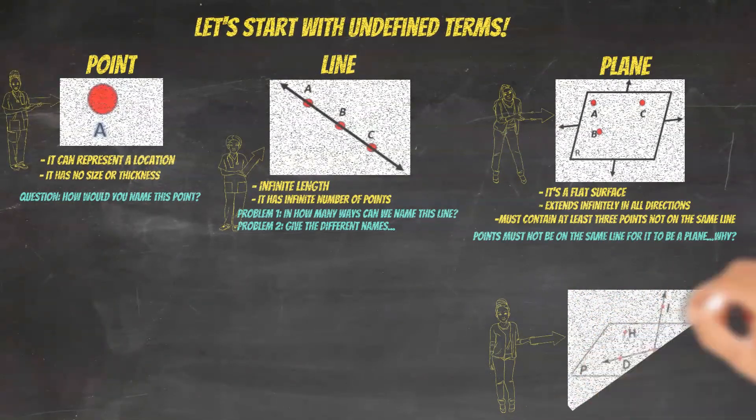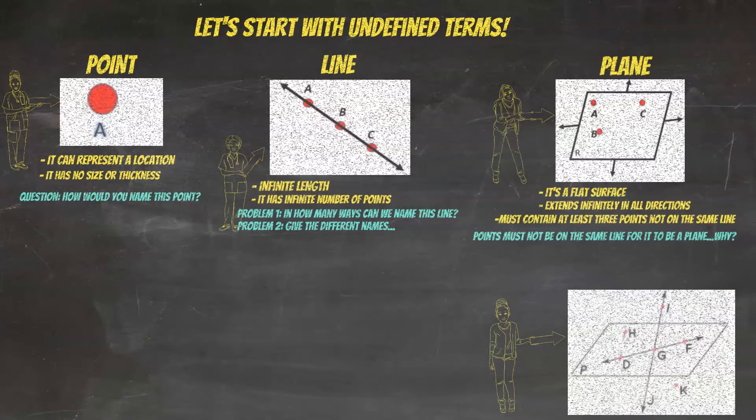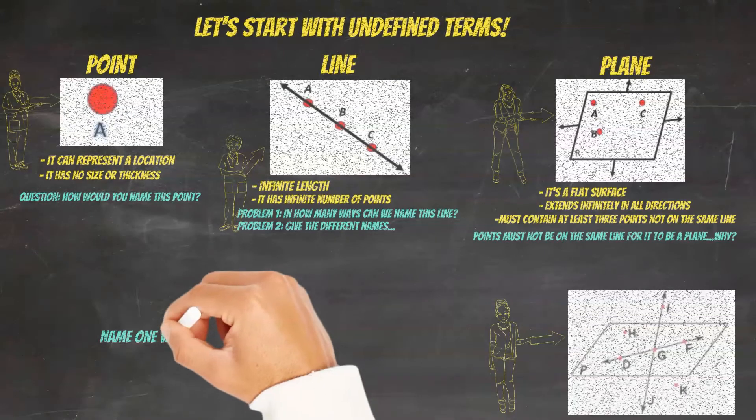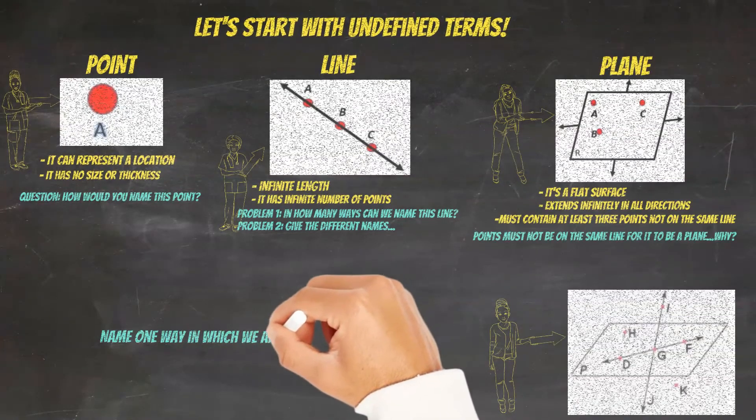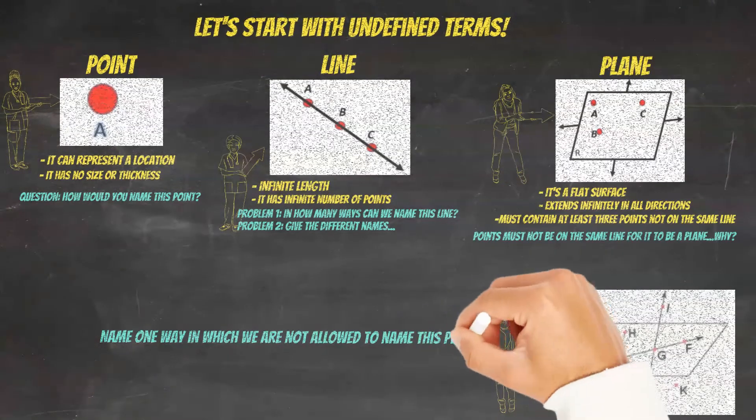Let's look at the following diagram. Here you'll see a plane, a line on the plane, and a line intersecting the plane at one point. So the question here is, I want you to give me one way in which we are not allowed to name this plane.